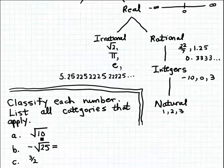So some of these numbers may fall into multiple subsets or multiple categories of real numbers. So let's start with example A here, square root of 10. Now 10 is not a perfect square. 9 is a perfect square, its square root is 3, and 16 is a perfect square, its square root is 4.